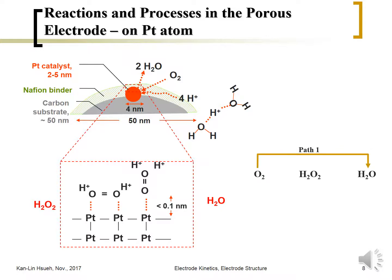The oxygen reduction reaction actually has three distinct paths. The first is the four-electron transfer path where oxygen is reduced directly into water. The second is a two-electron path where oxygen is reduced into hydrogen peroxide. The hydrogen peroxide may then undergo a further two-electron transfer to reduce into water, or it may be chemically decomposed into water and oxygen. Depending on whether the catalyst is platinum, gold, palladium, or another type, and whether the medium is acidic or alkaline, the reaction path will be totally different.